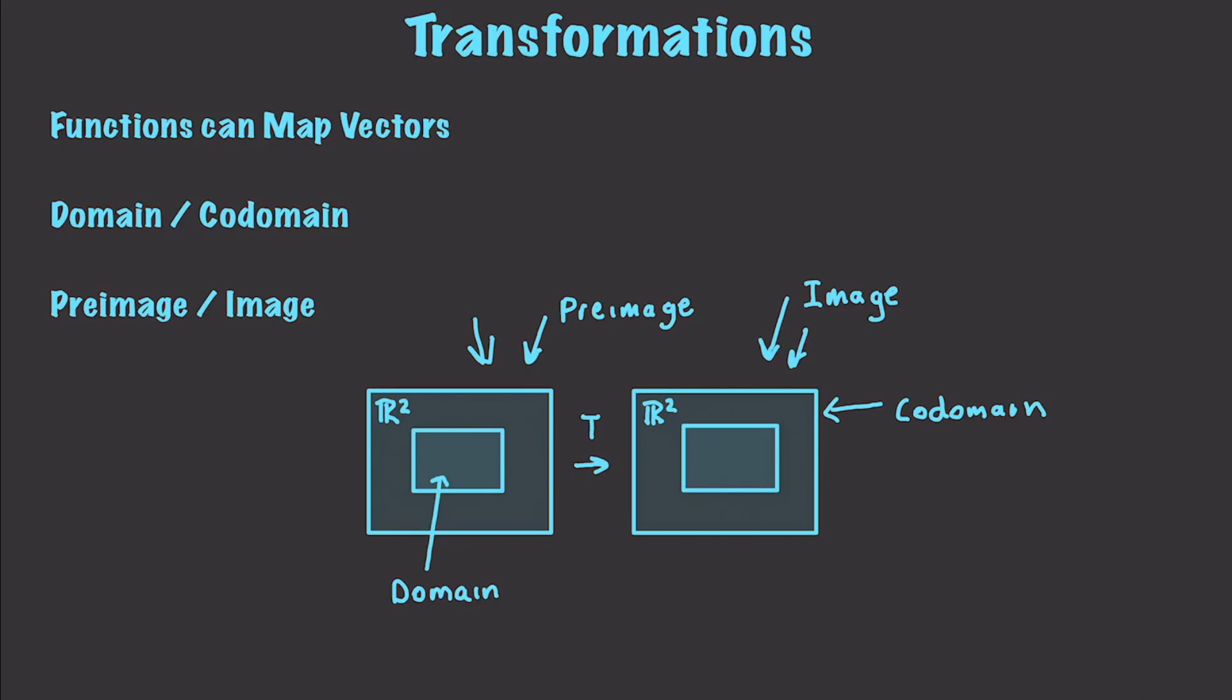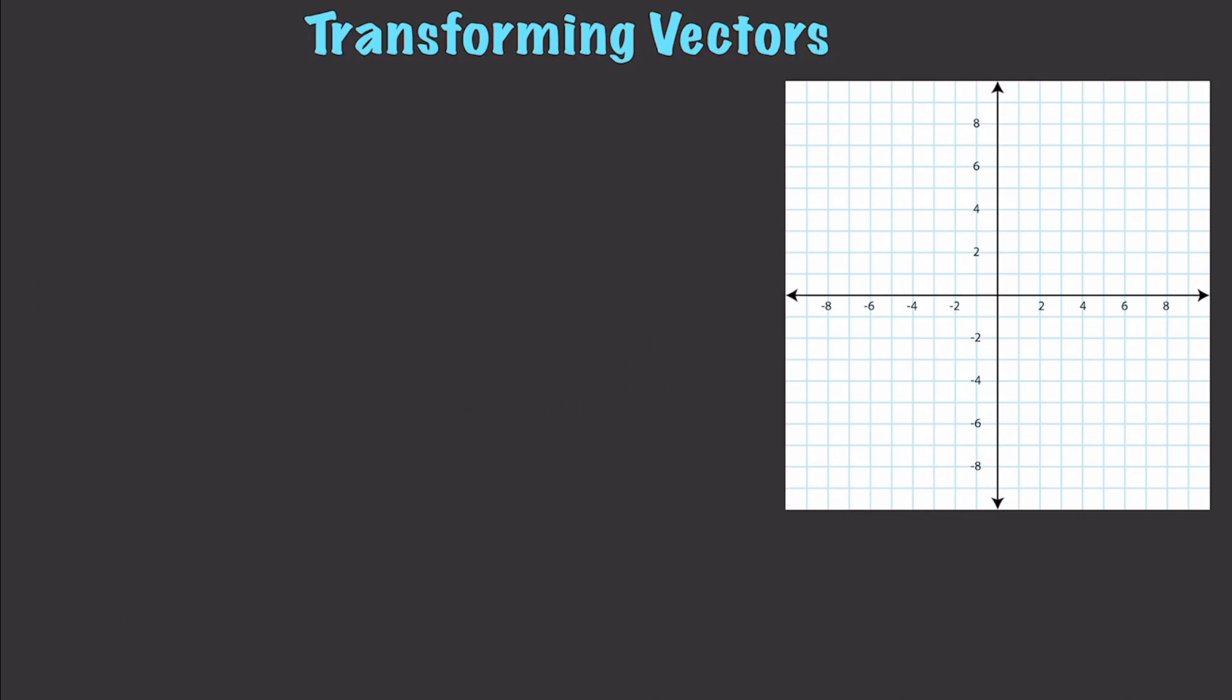And if we are taking a subset of vectors from a subspace and mapping to a subset of vectors in a larger subspace, that subset in the output is called the range. This is the range, so it's just a subset of our image. And what we're going to do here is transform a vector.